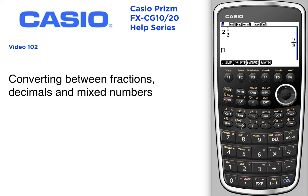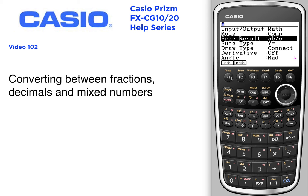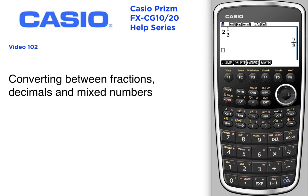You have to use the second function to change it. All I did there was change my default from improper fraction to mixed number, and it makes all the difference in the world.